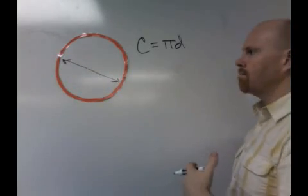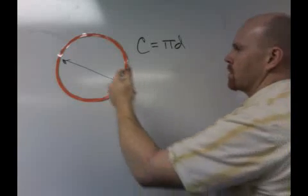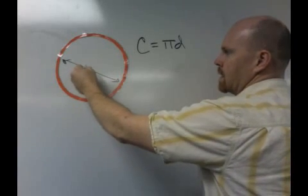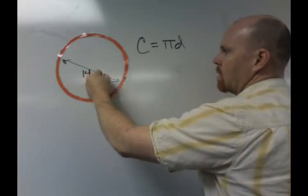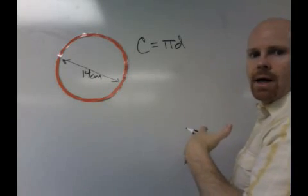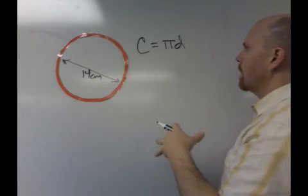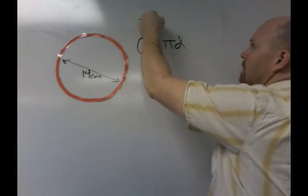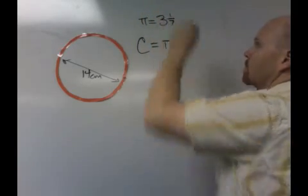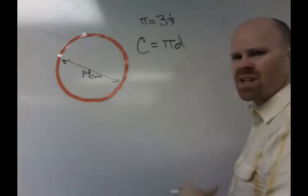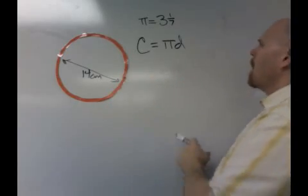Let's suppose this diameter is 14 centimeters, and we are going to find the perimeter using pi as 3 and 1/7th. So we'll just do that just to be different instead of using 3.14, because everybody uses 3.14.